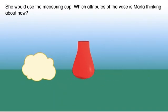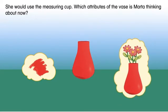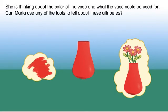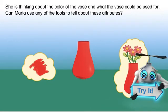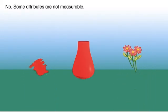Which attributes of the vase is Marta thinking about now? She is thinking about the color of the vase and what the vase could be used for. Can Marta use any of the tools to tell about these attributes? No. Some attributes are not measurable.